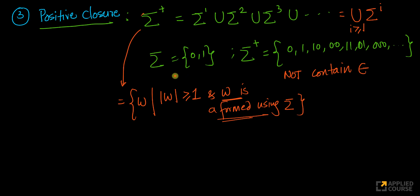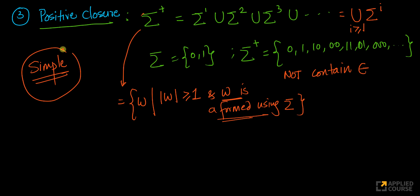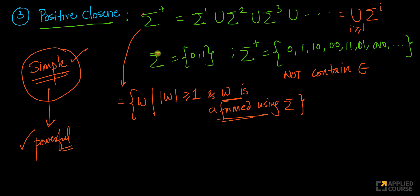These are very simple concepts — nothing very fancy. Most concepts in theory of computation are fairly simple mathematical ideas. While they're simple to absorb, they're also super powerful. Mathematically speaking, I would argue that theory of computation is one of the easier mathematical subjects to understand, yet it uses simple concepts like sets and graphs to build a mathematical model of what a computer is.